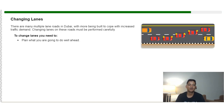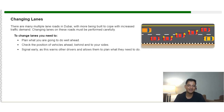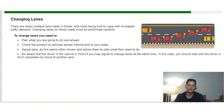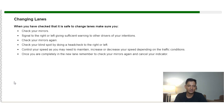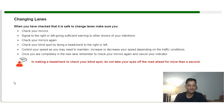To change lanes, plan well ahead. Check the position of vehicles ahead, behind, and to your side. Signal early to warn other drivers and give them time to plan. Be aware that the driver in front may also signal to change lanes at the same time — in that case, wait until they complete their move. When it is safe, check your mirror, signal right or left giving sufficient warning, check your mirror again, check your blind spot with a head check, and control your speed as needed. Once completely in the new lane, check your mirror again and cancel your indicator.